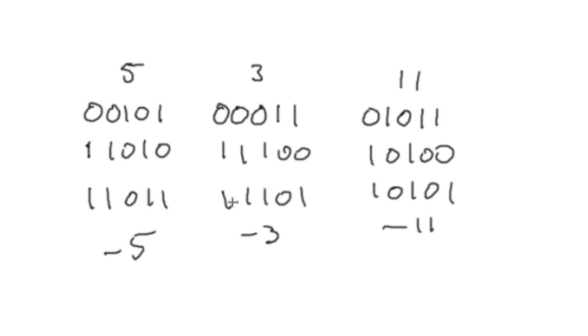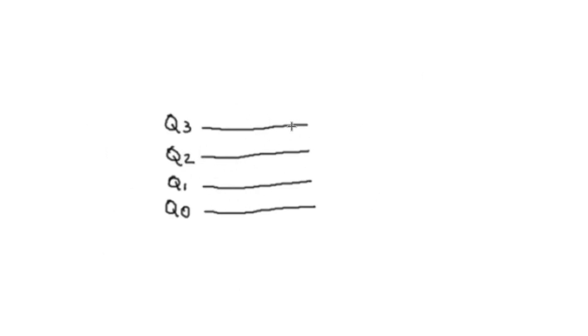That is always true for any negative binary number — the most significant bit is going to be a 1. As a result, when working with two's complement binary numbers, the most significant bit is often referred to as the sign bit because it denotes the sign of the number. The rule of thumb is: if it's a 1, your number is negative; if it's a 0, your number is positive. Creating a circuit to detect a negative number is actually fairly easy — you don't even need any logic gates. All you have to do is tap off the most significant bit.